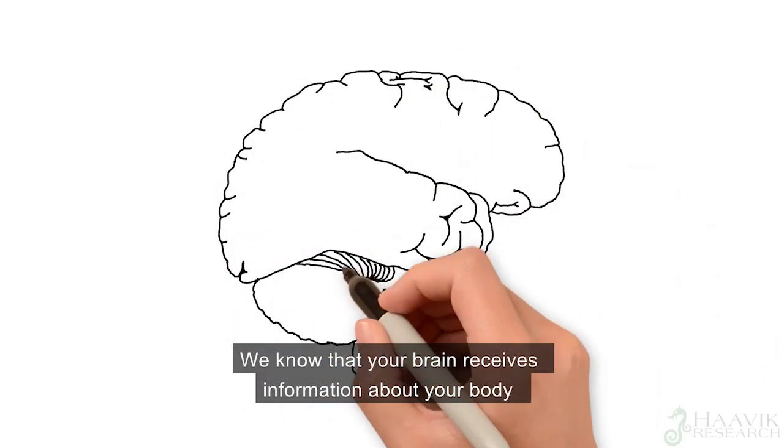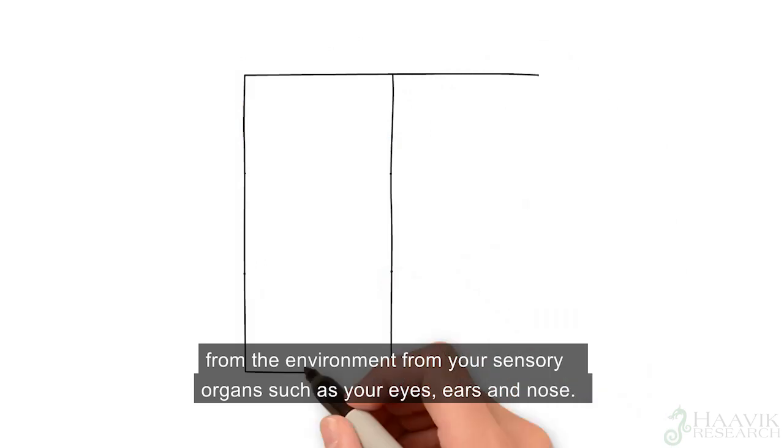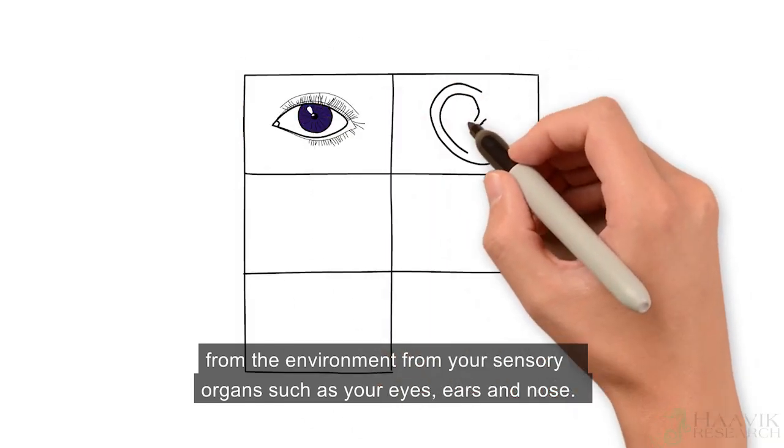We know that your brain receives information about your body from the environment, from your sensory organs such as your eyes, your ears, and your nose.